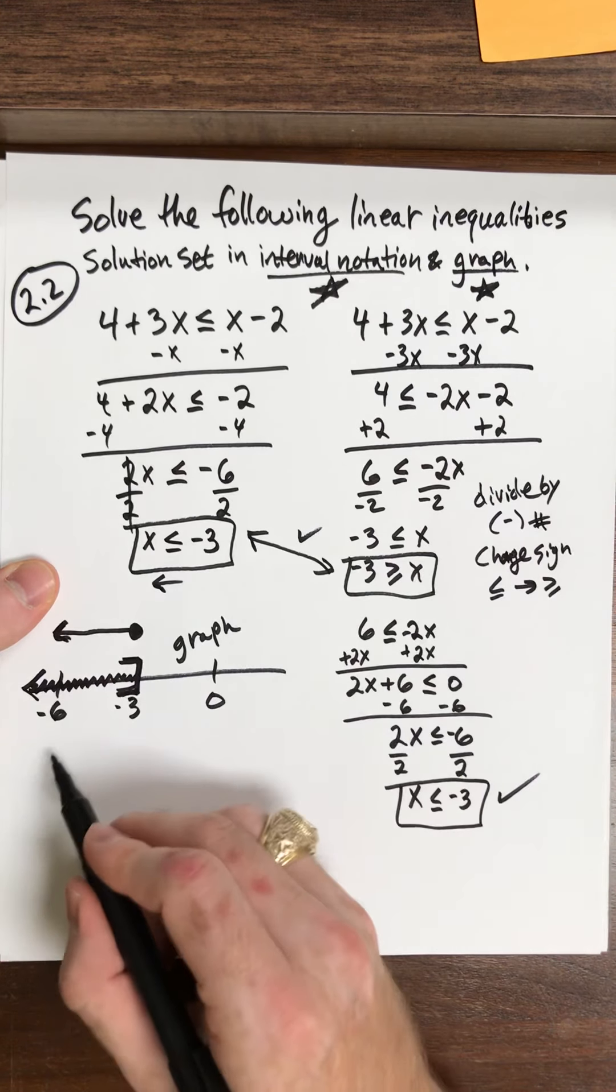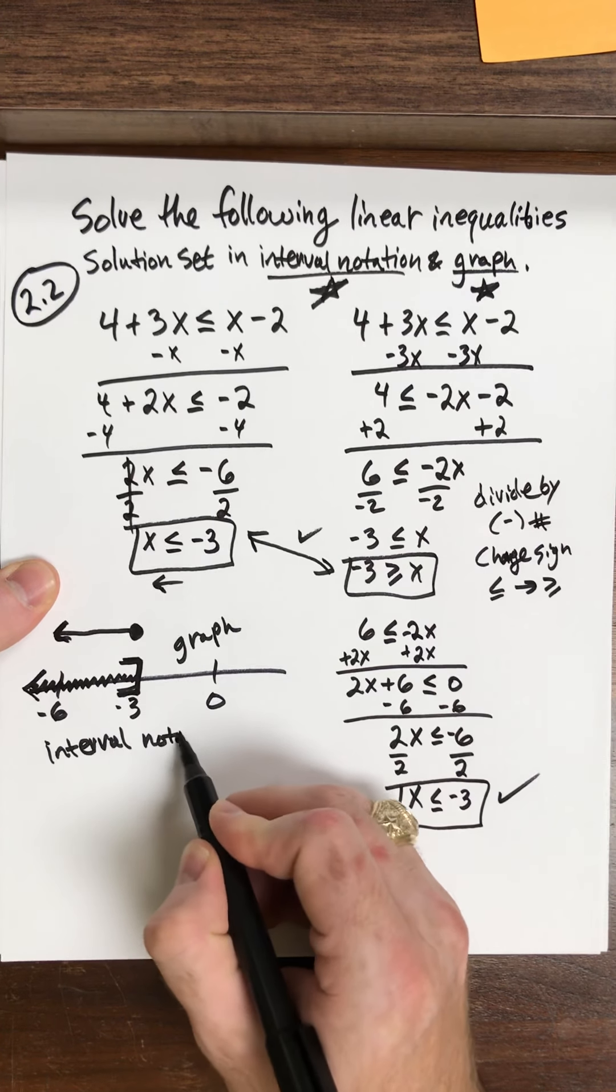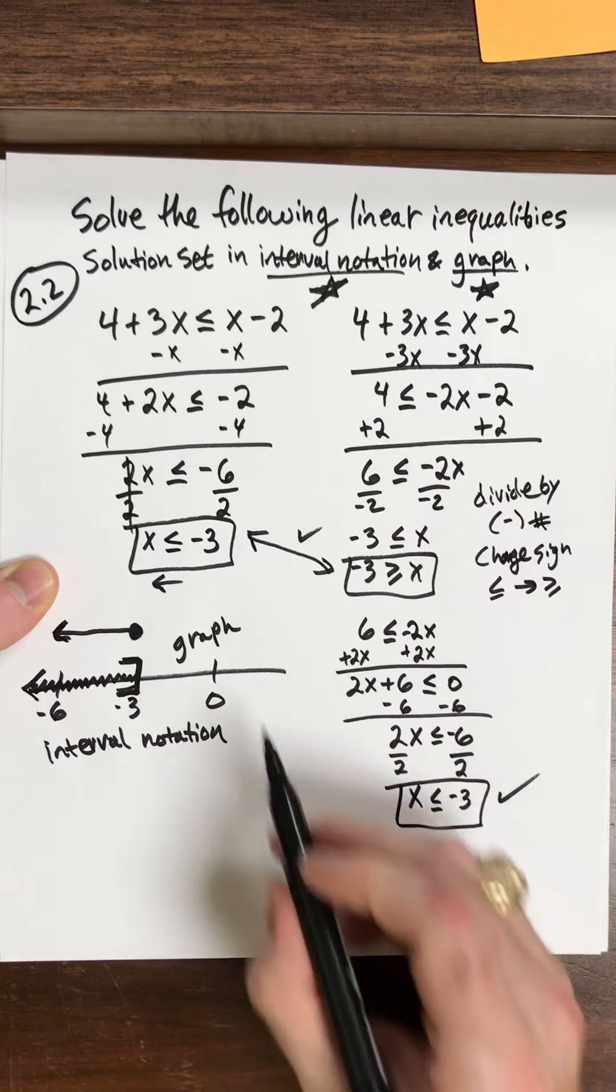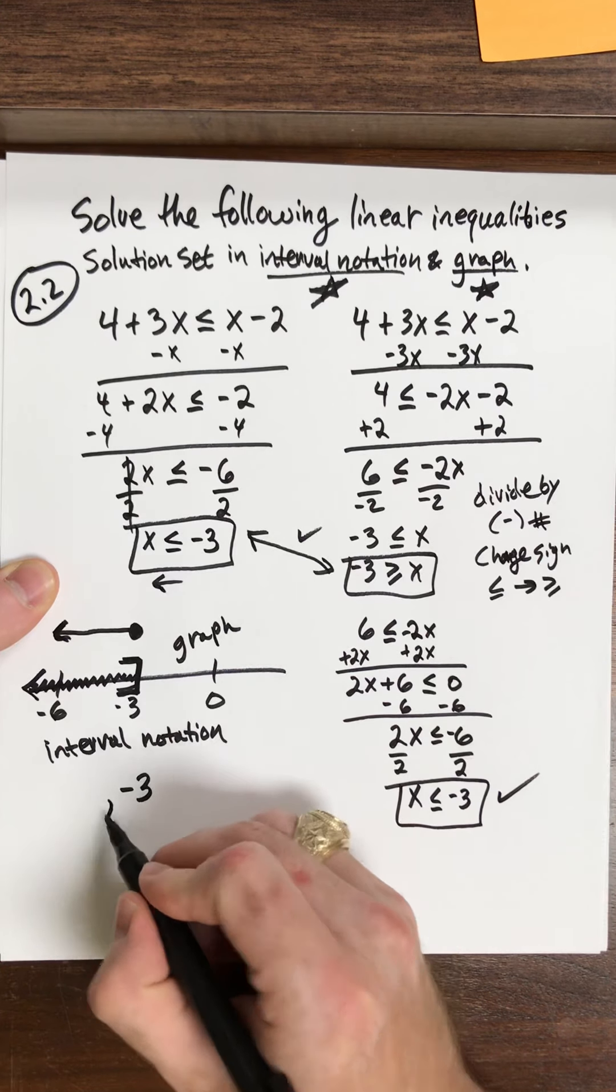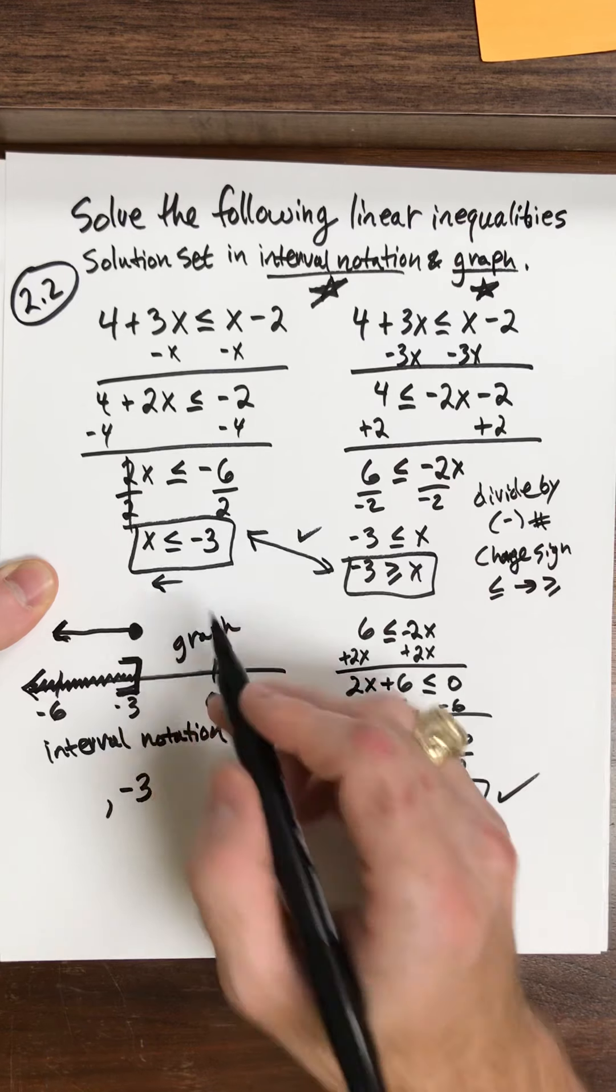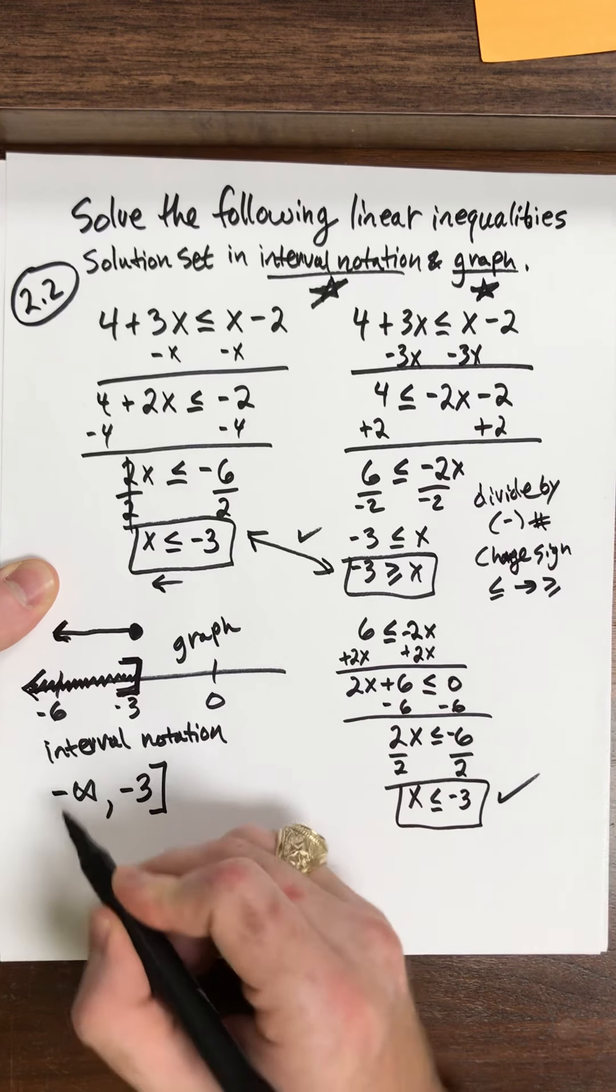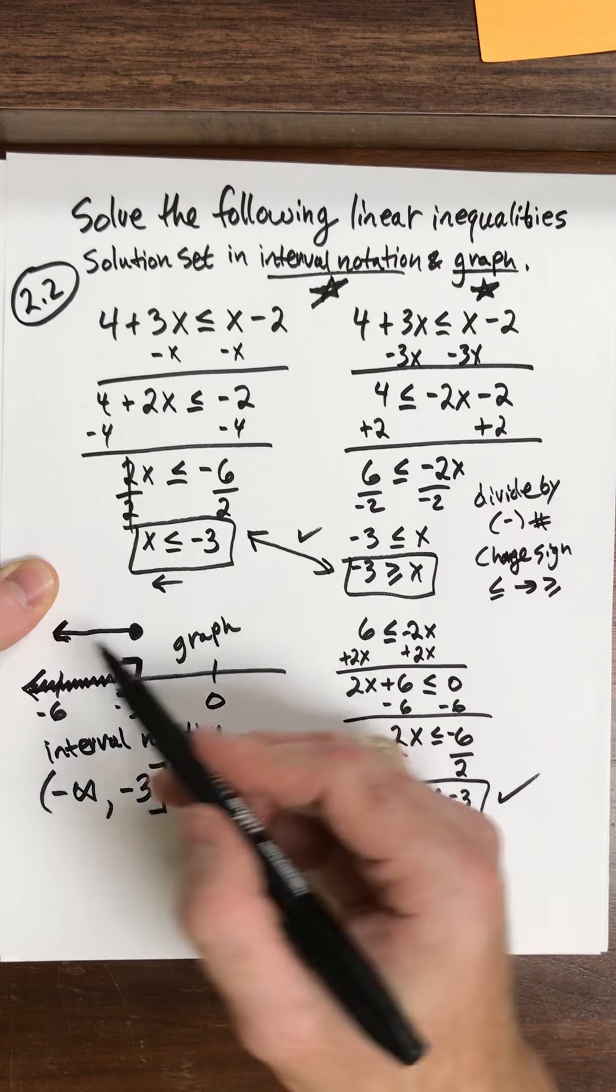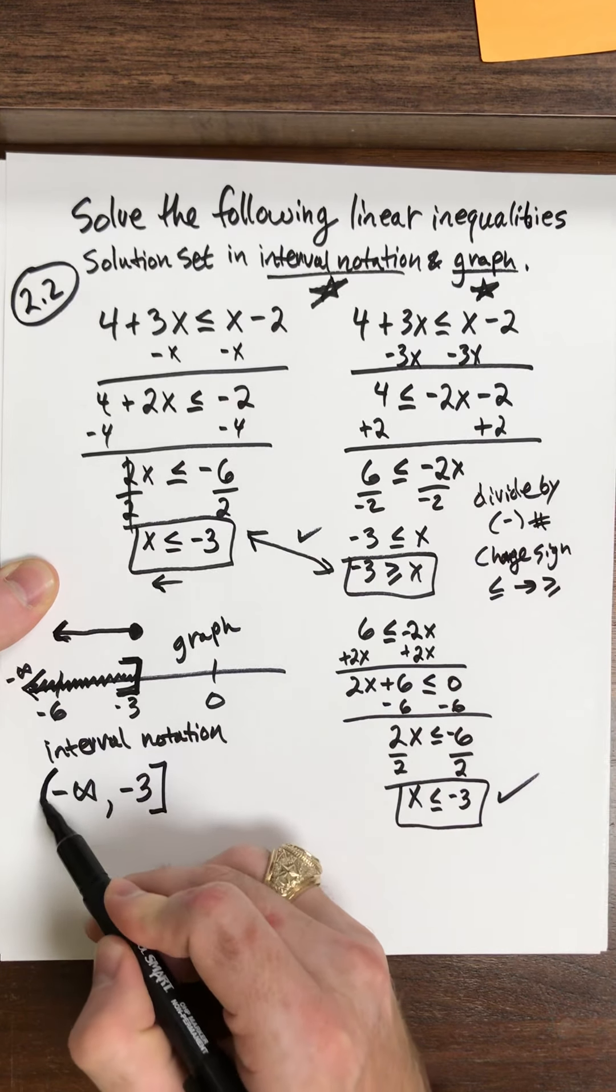But in interval notation, so interval notation, we're using the number. So what do I have? I've got negative 3. Okay, so I want all numbers that are less than or equal to negative 3. So that's negative 3. And then everything to the left of negative 3. So this goes off to negative infinity this way. Now use a parentheses here.